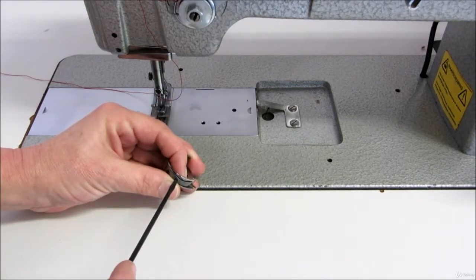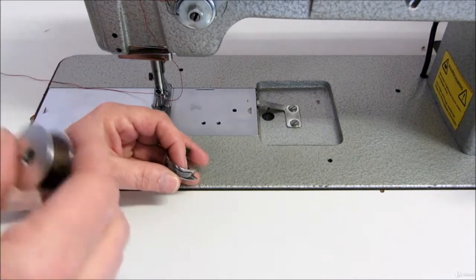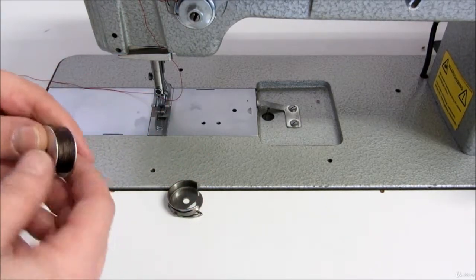If the tension is no good when sewing, you can adjust the tension with this little screw. Thread the spool like this.